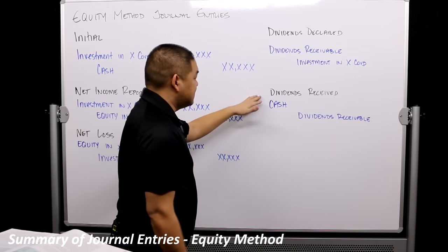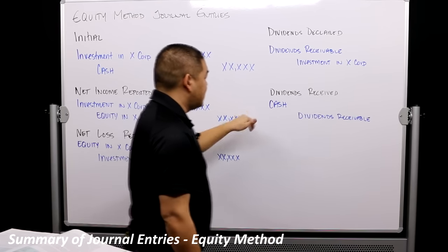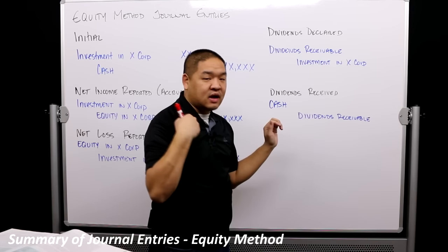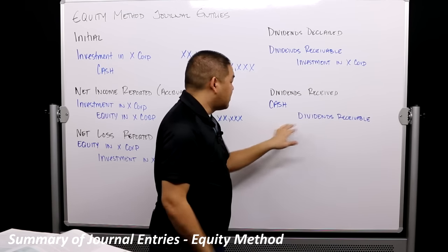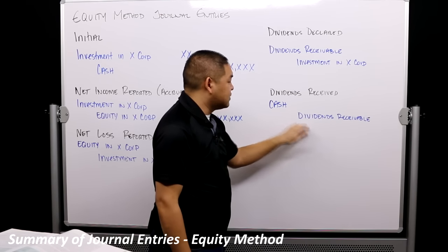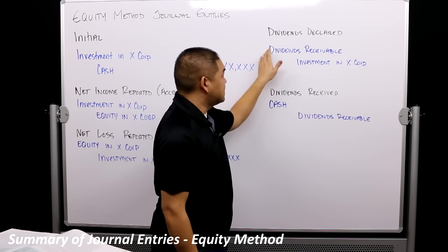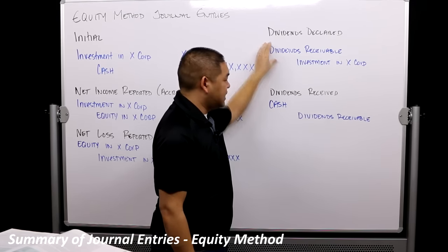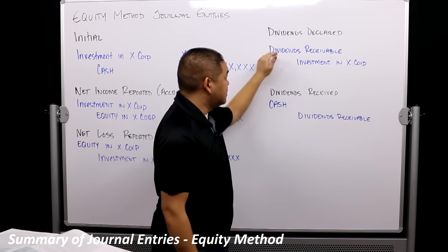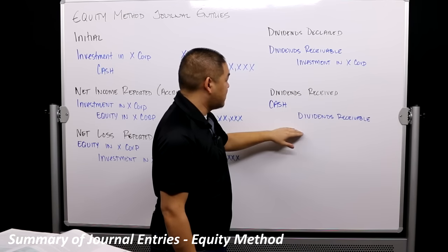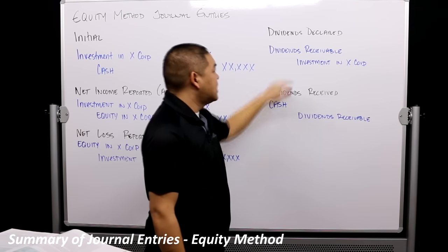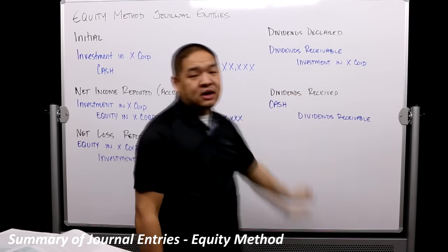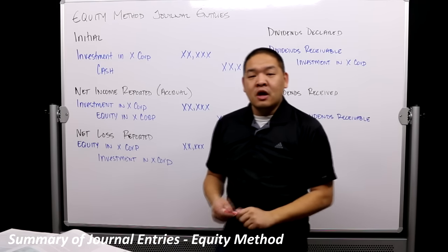When we actually receive the dividends, we debit Cash because we're receiving cash and credit Dividends Receivable to eliminate that receivable. The dividends receivable becomes zero as those cancel each other out, and we've received cash while having already reduced our Investment in X Corp.